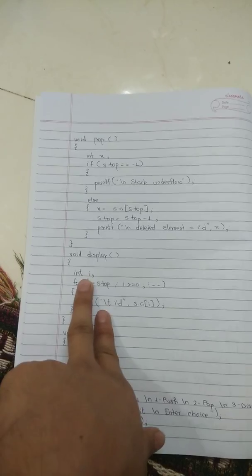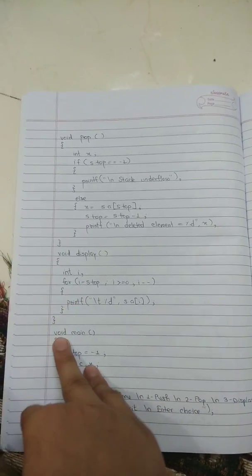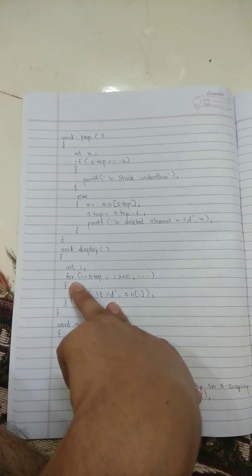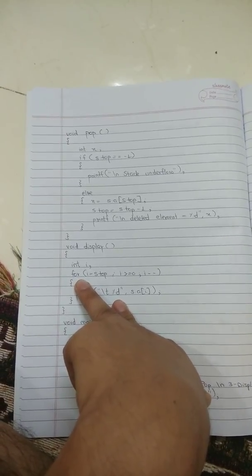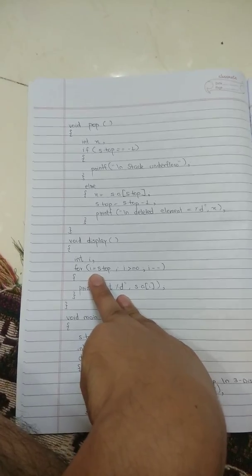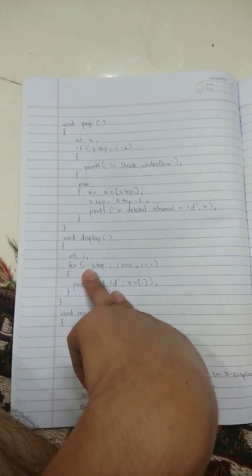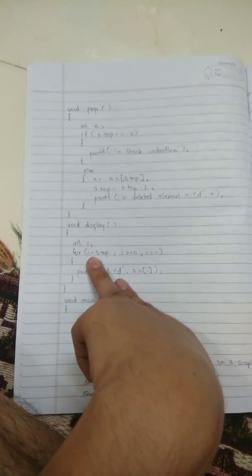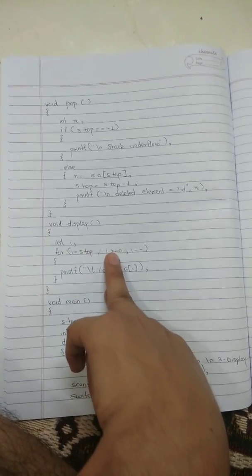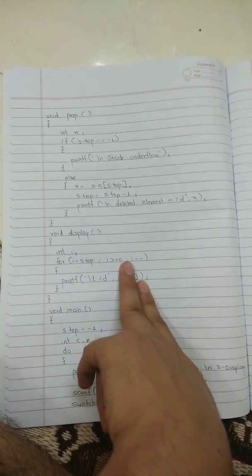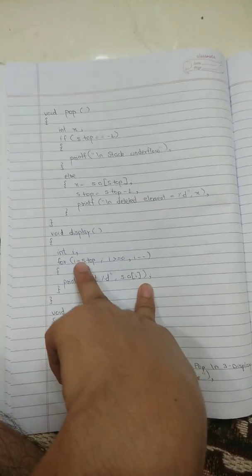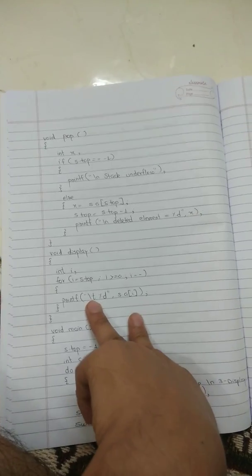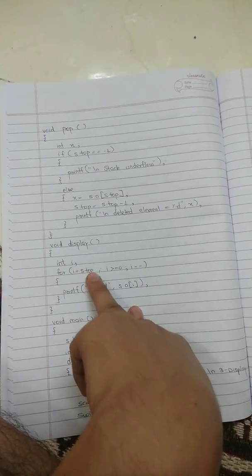Now the void display function. We declare a variable i and use a for loop to display the elements in the stack. The loop starts from i = s.top — the topmost element — because stack is a LIFO structure (last in, first out), so the top element is displayed first. The loop goes down to the 0th element, decrementing i each iteration.